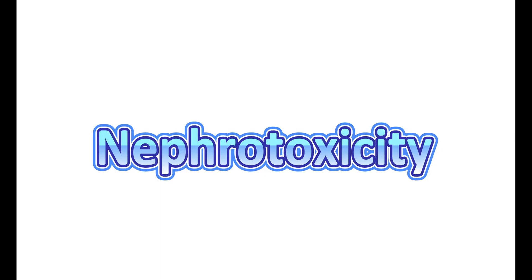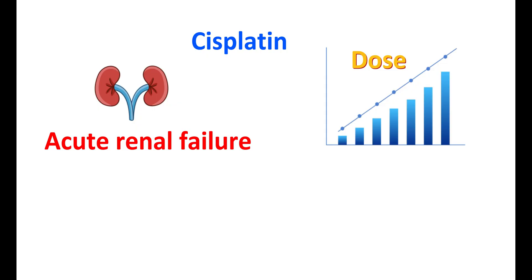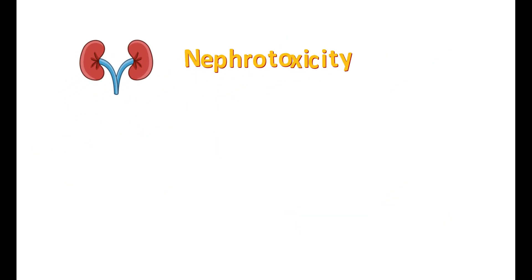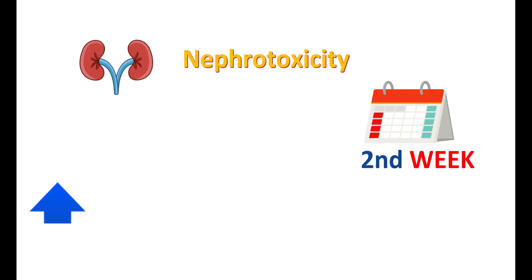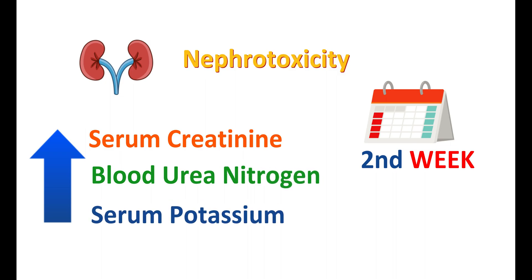The second important side effect is nephrotoxicity. Use of cisplatin can lead to acute renal failure, which is more pronounced with increased doses. Due to accumulation of the drug with repeated use, acute renal failure may worsen with an increased number of cycles. Symptoms of acute renal failure may develop within five days of treatment, while in some people nephrotoxicity becomes more pronounced in the second week, with elevated serum creatinine, blood urea nitrogen, and serum potassium levels — all indicating renal dysfunction.